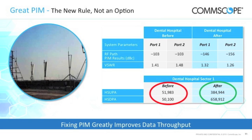Here's some data about what PIM can do to a site. At a dental hospital with an installed antenna, the data rate was relatively low. An indicator for PIM in the network is low data rate and lower-than-expected transported traffic. We went to this site, found a cable that wasn't connected correctly — it was loose — fixed that, and the PIM performance significantly improved, as did return loss. As a result, the throughput rate went up by a factor of 8 to 13. If you have PIM, it slows your network down; remove the PIM and you can go full speed.